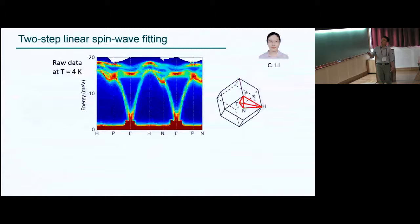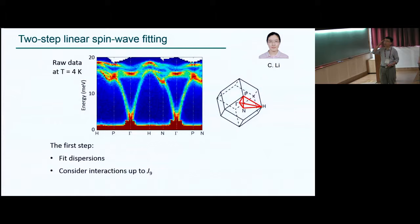So with these neutron data, then we are able to do an extensive spin wave fitting. And it turns out that because the data is so extensive, then to avoid a local minima problem, we have to do it in two steps. In the first step, we just attempt to fit the dispersions. And we tried many recipes, and it turns out that we need to consider interactions up to J9 in order to get a good fit. And so these are the data, and the best fit in terms of just the dispersion looks like this. So it goes through, more or less, the data center.